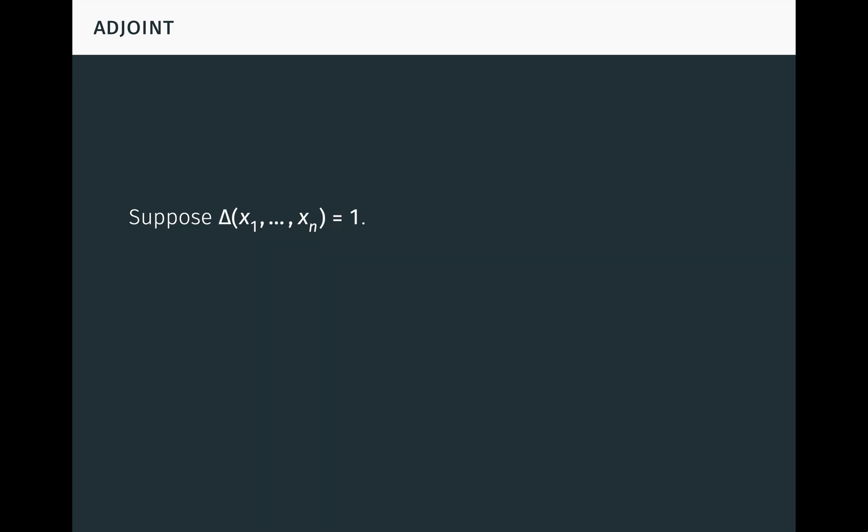Suppose delta of (x1,...,xn) equals 1. Then from the definition it follows that adj(phi)(x) is the sum seen here, where x appears in the i-th position of delta. This formula allows you to compute the adjoint should you ever need to.